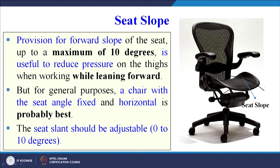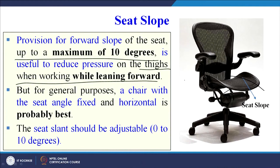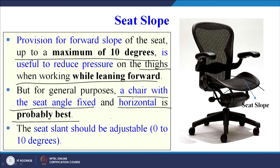Regarding seat slope: a forward slope of up to a maximum of 10 degrees is useful to reduce pressure on the thighs when working while leaning forward. For general purpose, a chair with the seat angle fixed and horizontal is probably best. The seat slant should be adjustable, ideally between 0 to 10 degrees, depending on the type of work being done by the operator.